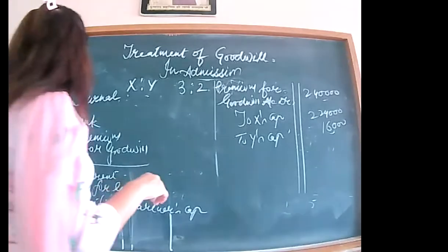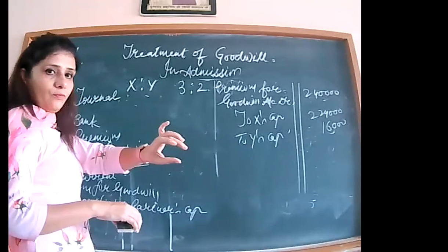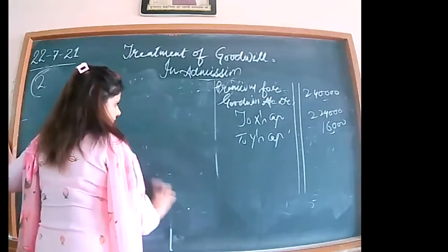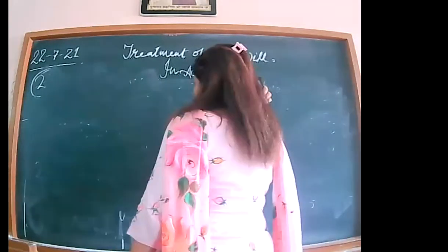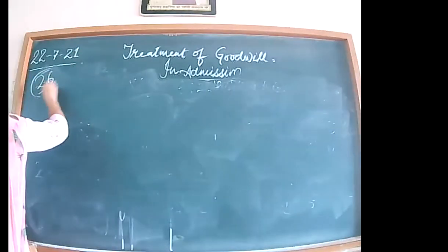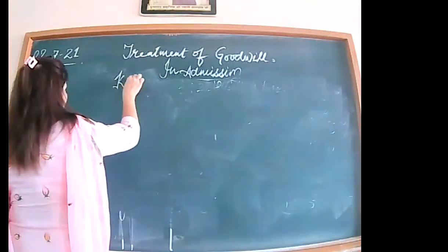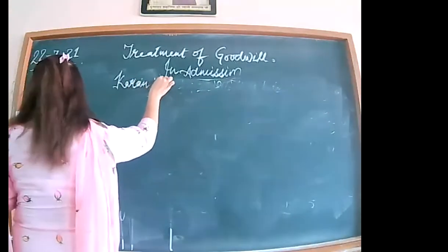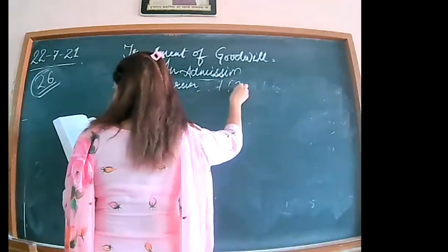Now illustration 26 — a paper question. Karan and Varun are partners. Karan is to Varun. Their profit sharing ratio is 1 is to 2. They maintain fixed capitals, which means all entries will be passed using current accounts.